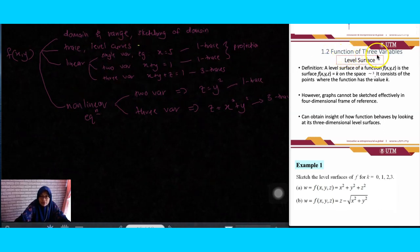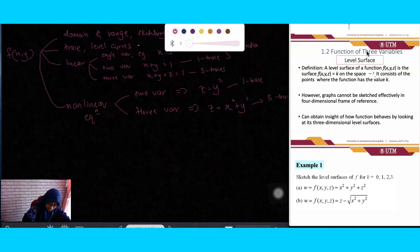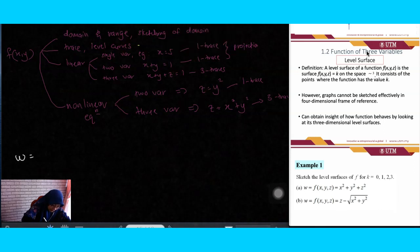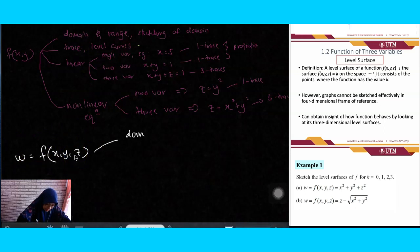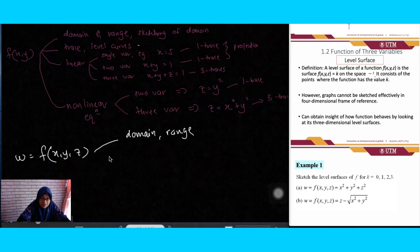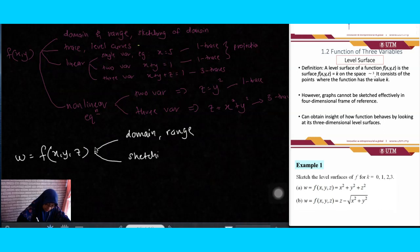For a three-variable function, we have w = f(x, y, z). We already discussed the domain and range of this type of function in a previous video. Now we want to look at sketching the graph of a three-variable function.